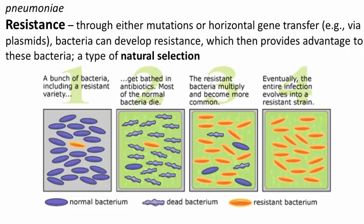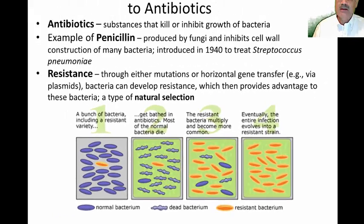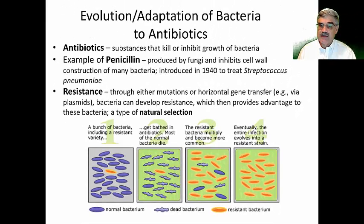If you treat that sample of bacteria with the antibiotic, you kill the normal bacteria but not the one that has randomly developed the mutation giving it resistance. Then if you continue to grow those bacteria, only a few normal bacteria might survive, but the resistant bacteria take over and multiply. After a while, you would have only the resistant bacteria surviving — survival of the fittest in the presence of an environmental challenge.